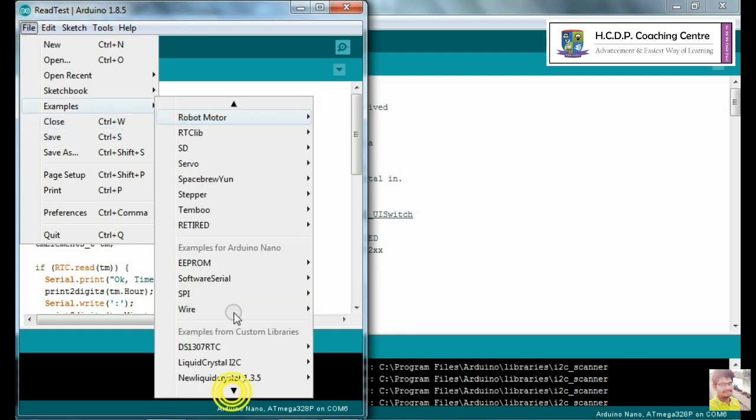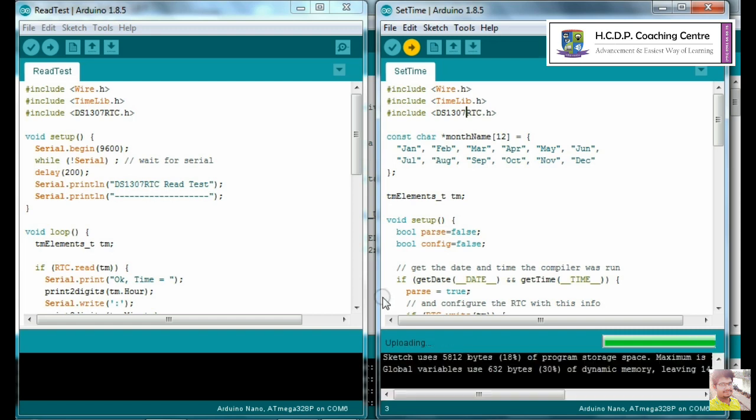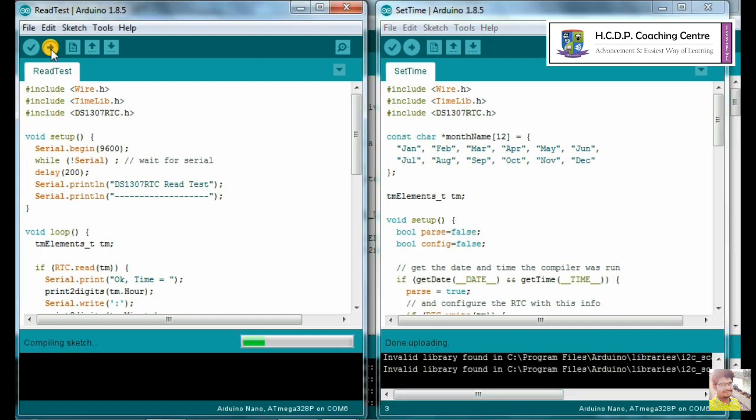Just check the description, download it and copy it in the example folder like C program files, Arduino and example path. And that's all. Open the set time and retest program. First upload the set time code and then retest. And we are done.